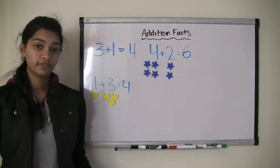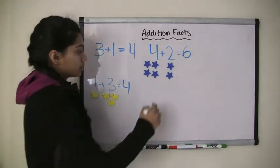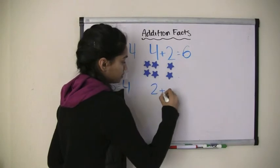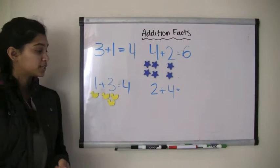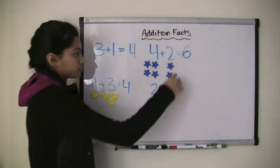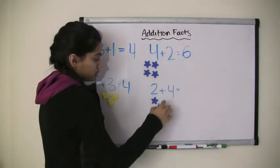But once again, if I flip them, then what will happen? So I have 2 plus 4 instead of 4 plus 2. Well, let's find out. So I start off with 2 stars. 1, 2.